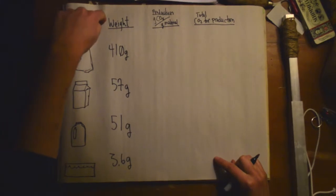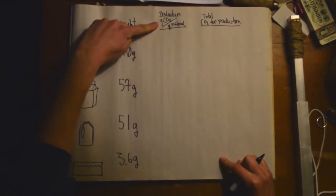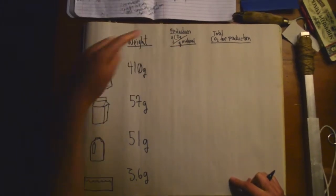Knowing the weight of each container without milk, we found the grams of CO2 per gram of material and calculated the total CO2 emissions for production per container.